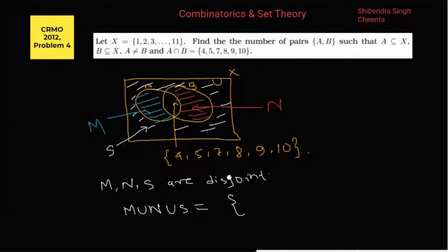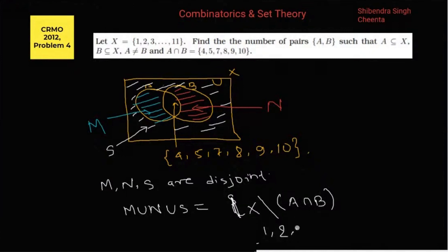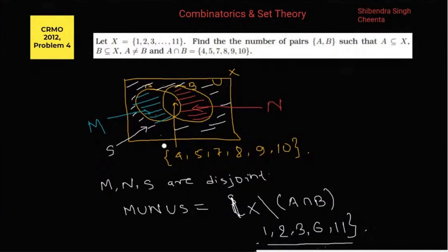So X minus A intersection B — this piece — contains the elements 1, 2, 3, 6, and 11, which together make up M union N union S. So we need to find the pairs A and B.